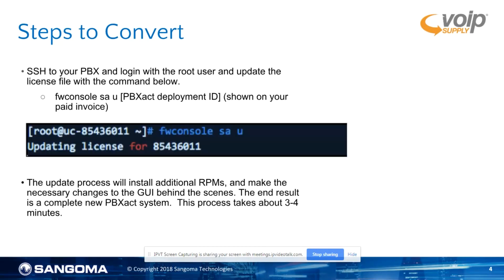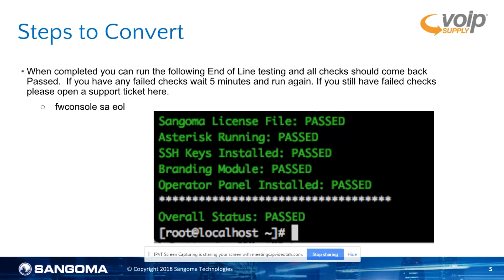The next steps you're going to need to follow: you're going to have to log into an SSH. For this example, we're going to use PuTTY. Once you are logged in, you're going to use root user and the following command that you see on this screen. Once we do that, the conversion will happen behind the scenes. There is another command that we can run to verify that everything has passed, but I do recommend waiting a couple minutes — there is a three to four minute recommendation before you run this, just to make sure that everything on the back end is done.